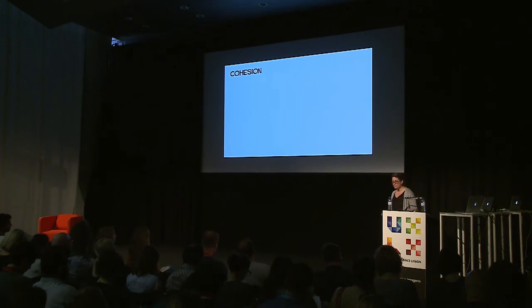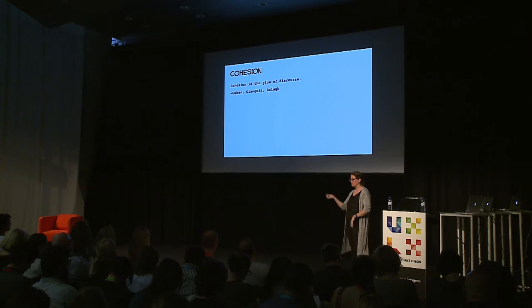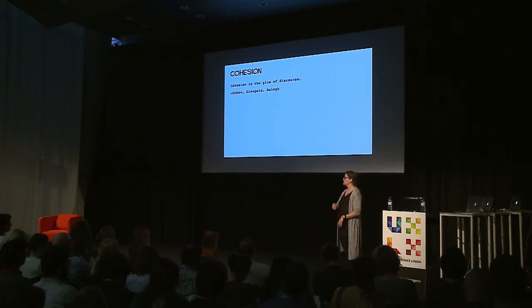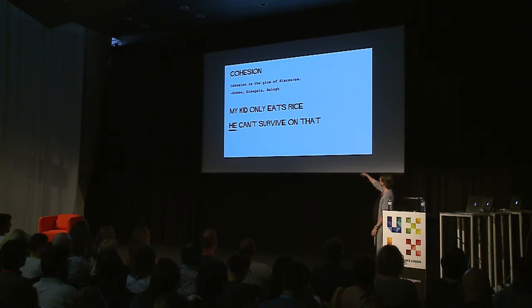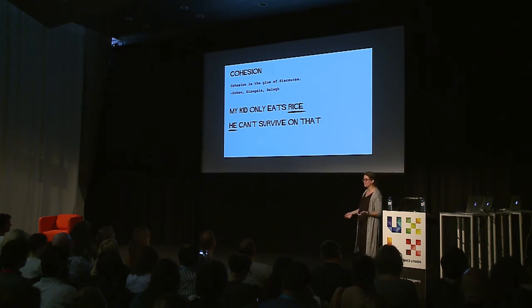First: cohesion. Cohesion is the glue that holds language together. When I say so, that's a discourse marker, and those discourse markers are what make a conversation make sense. Consider: my kid only eats rice. He can't survive on that. Who is the he? My kid. What is that? Rice. That's mind-boggling for a computer to understand, but most people here can get it pretty easily. Those substitute words are parts of creating a cohesive conversation. If I said over and over: my kid only eats rice, my kid can't survive on rice — I would sound a lot more like a machine than an actual human being. So it's important that the voice interfaces we design have cohesive language.